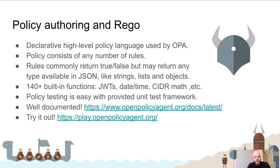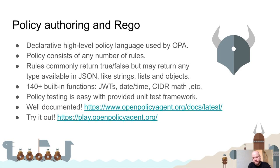There are almost 150 built-in functions today. Rego is not a general purpose programming language, so these built-in functions focus on things useful in the context of policy — validating certificates, verifying JSON web tokens, date and time functions, IP address ranges, and things around identity and permissions. OPA also ships with a testing framework so you can test your policies in isolation.